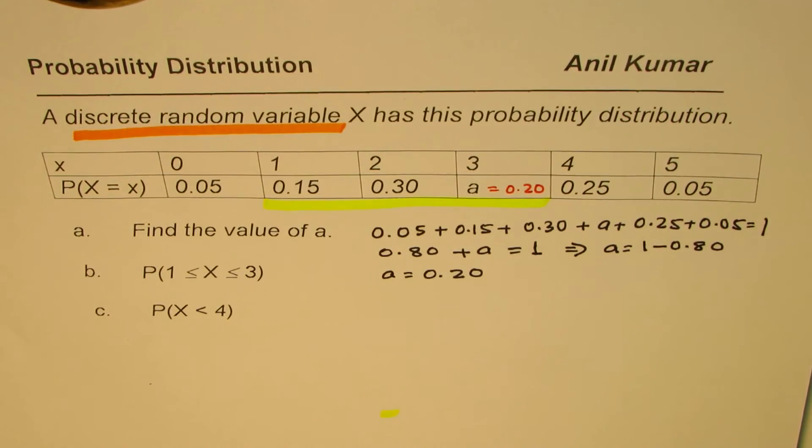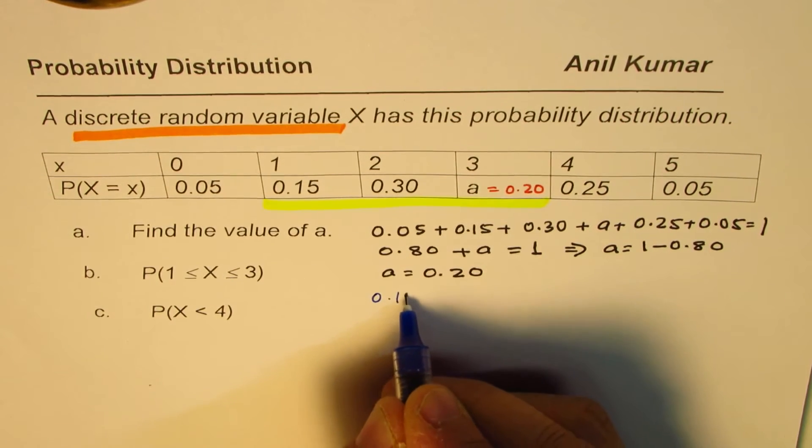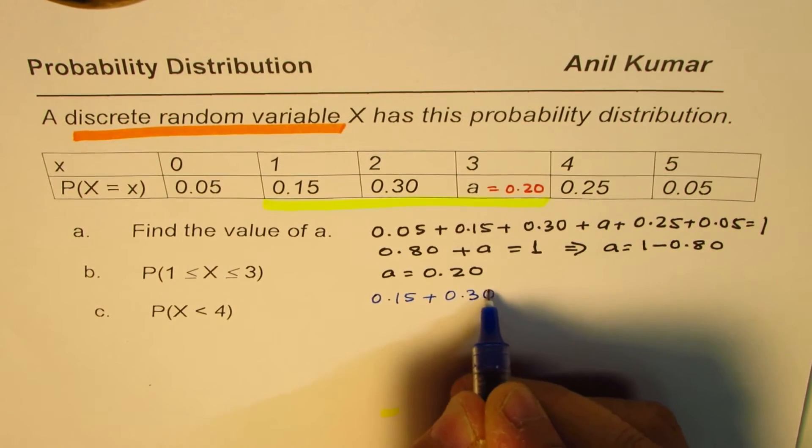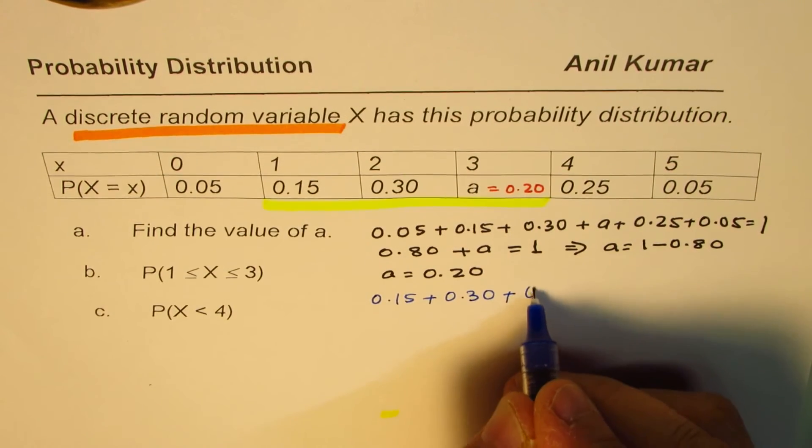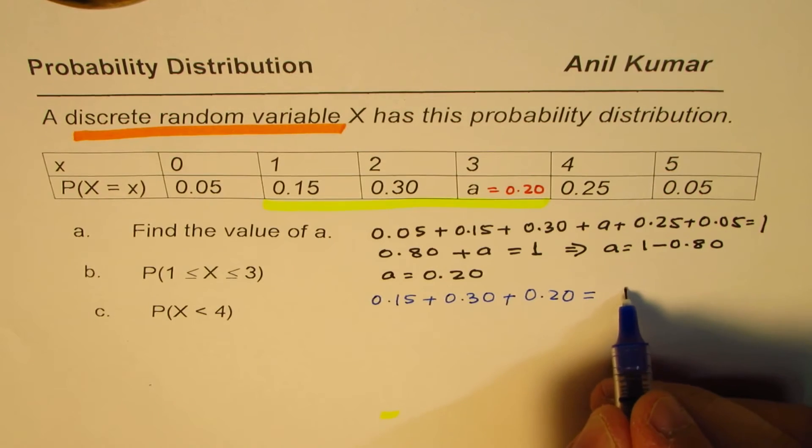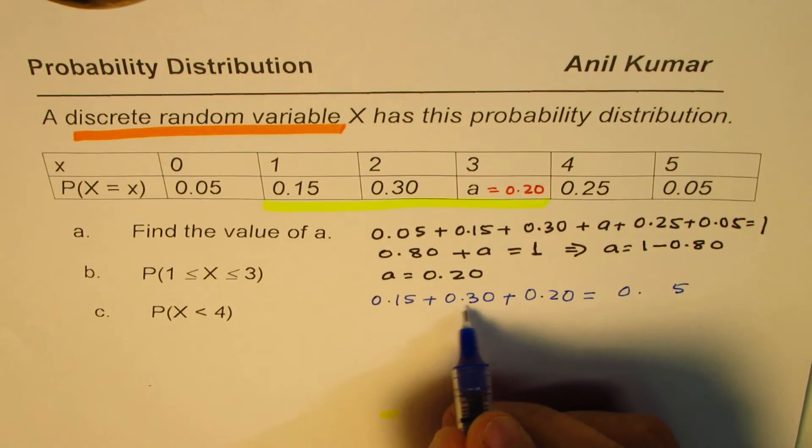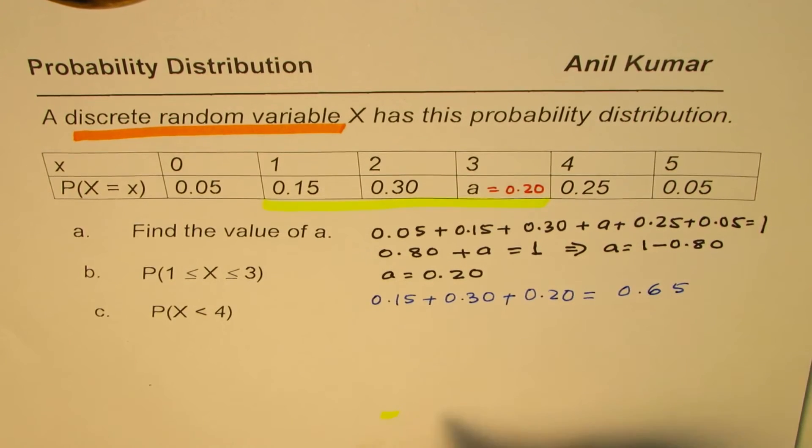So if we add them up, we get our result. So it is 0.15 plus 0.30 and the value of A which we got as 0.20. So we get 0.65.